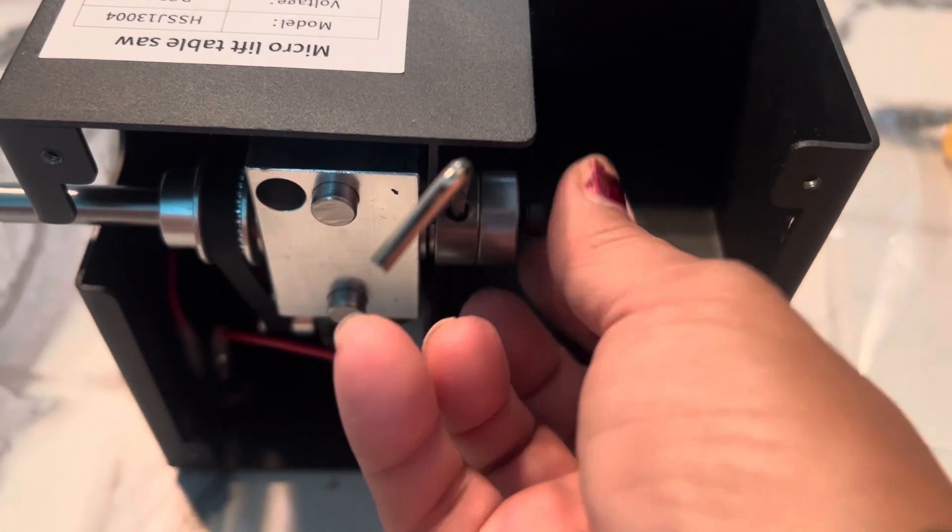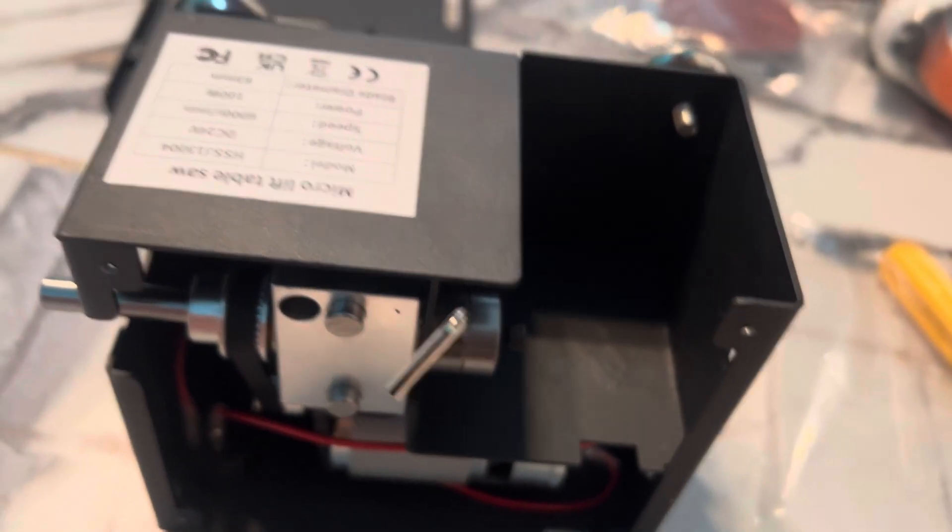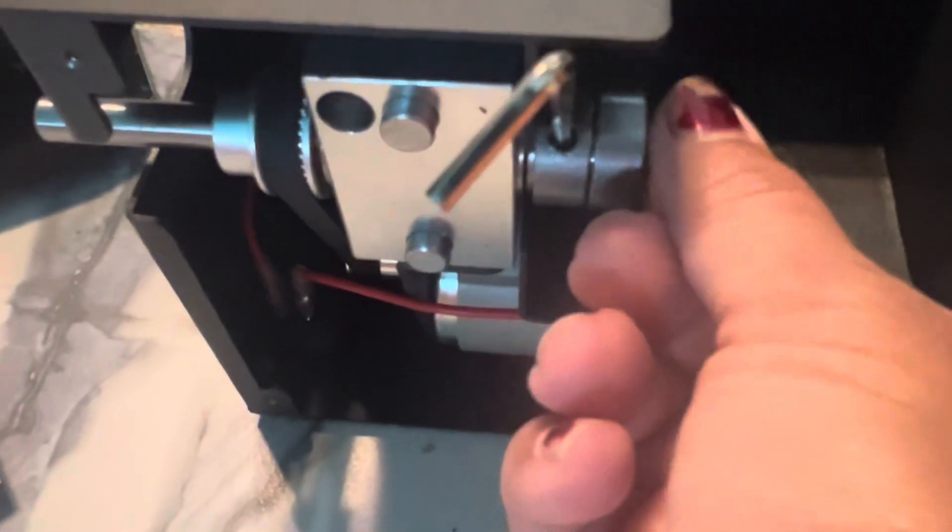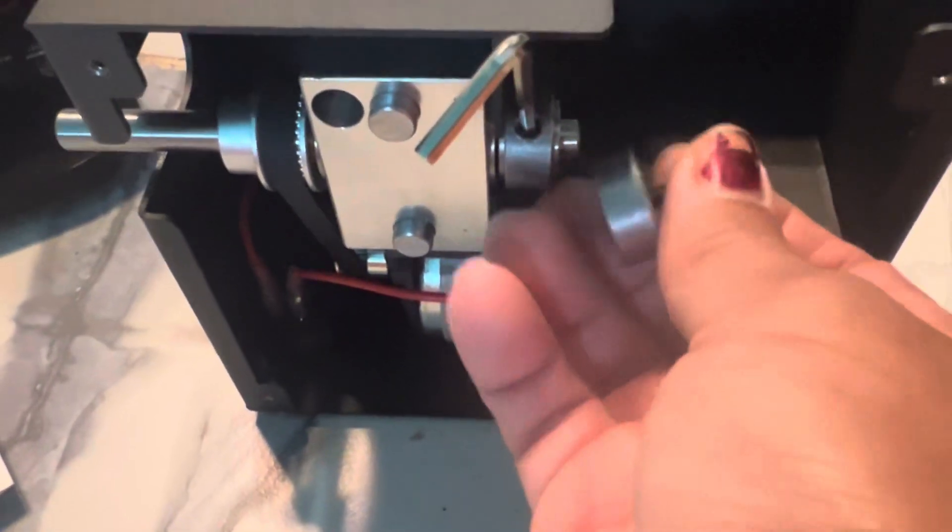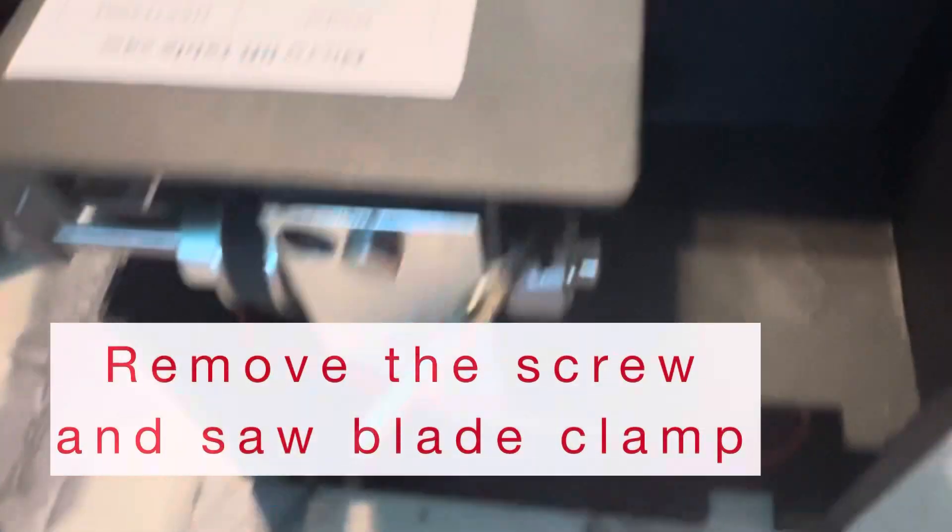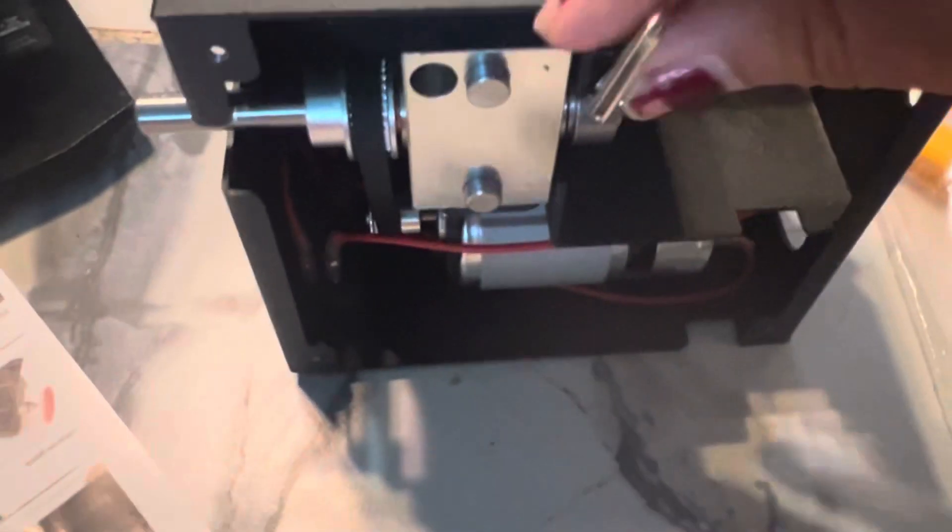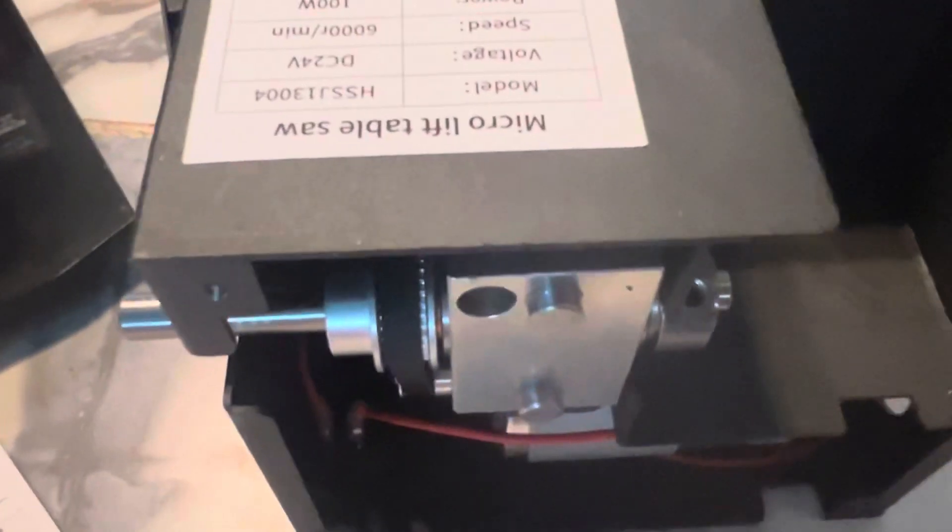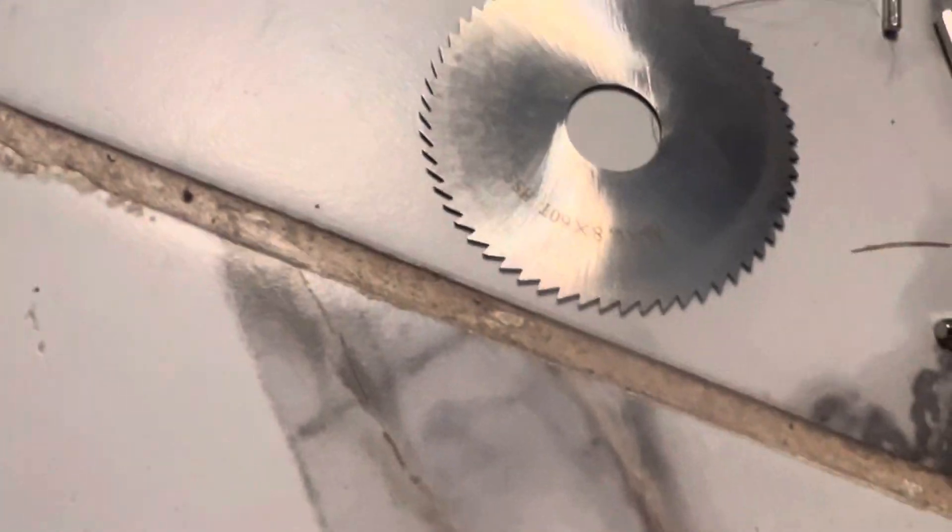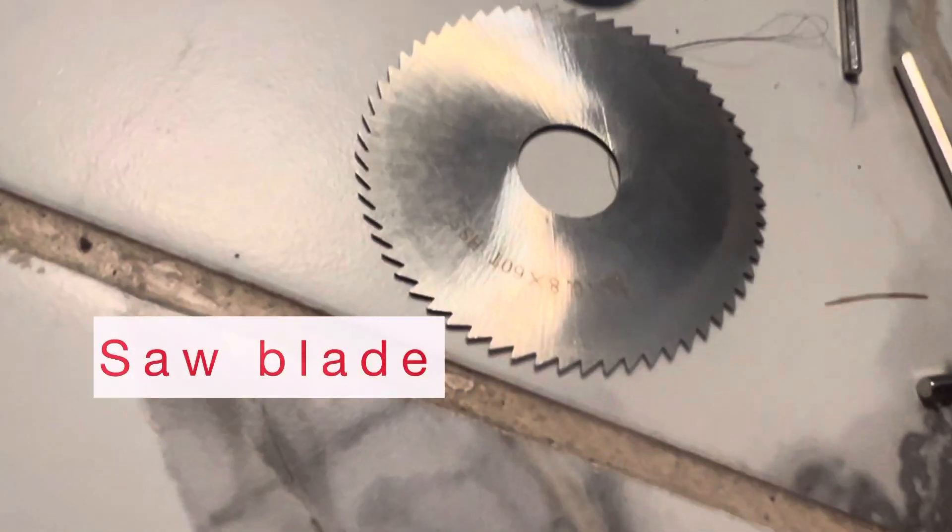You have to loosen that using the two allen wrenches that are included with your purchase. One holds the top because it does not loosen without it, and the other one loosens the screw. Once that screw is loose, you take it off. Make sure you set aside all the four small screws and there's one bigger screw for the blade clamp.